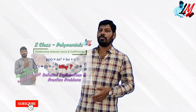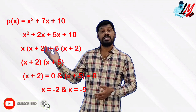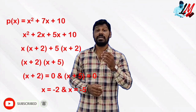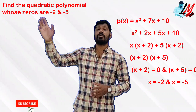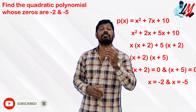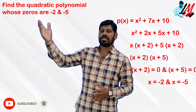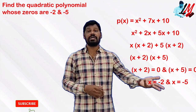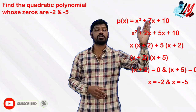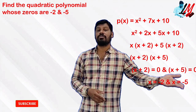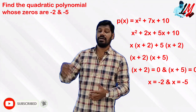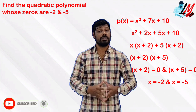In this video, we will discuss the zeroes of a polynomial and the different zeroes in the polynomial. Find the quadratic polynomial whose zeroes are minus 2 and minus 5. The particular equation is p(x) = x² + 7x + 10 — a quadratic polynomial. The zeroes are minus 2 and minus 5.